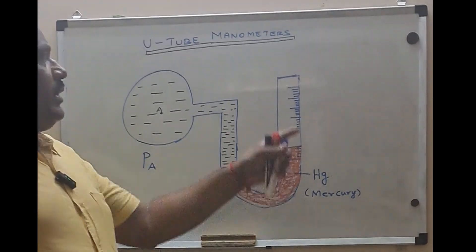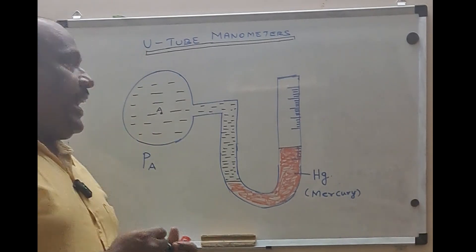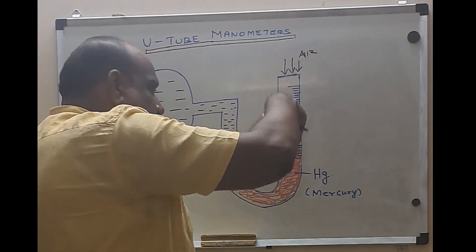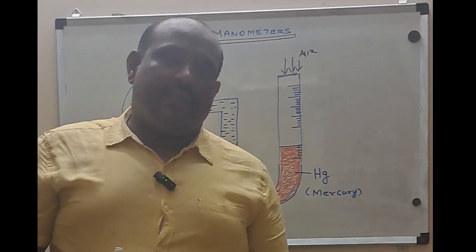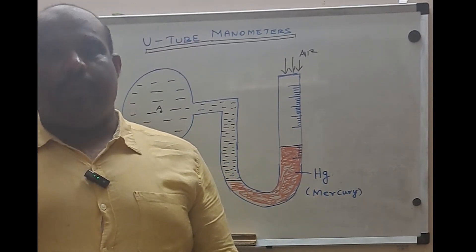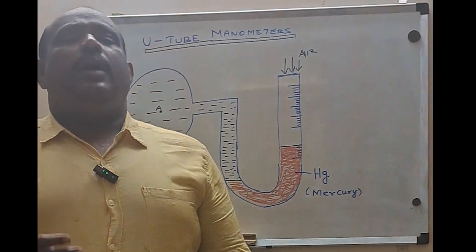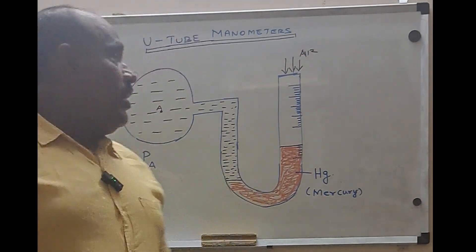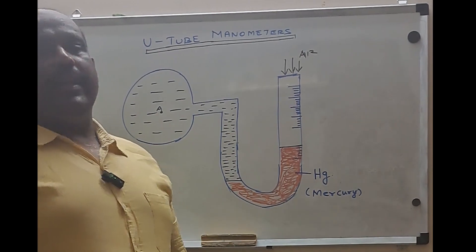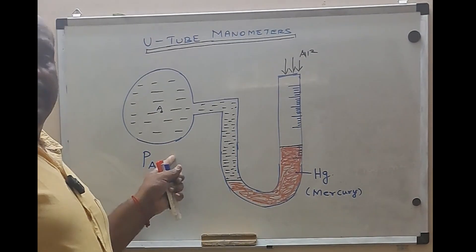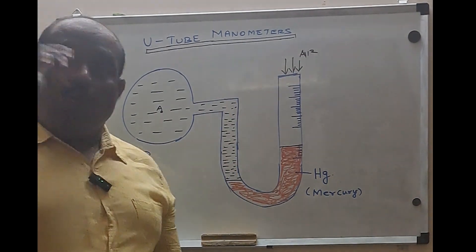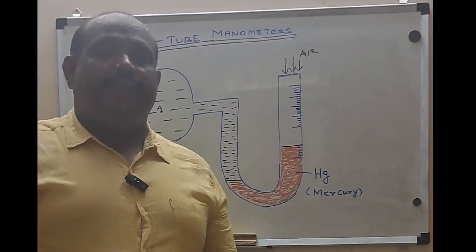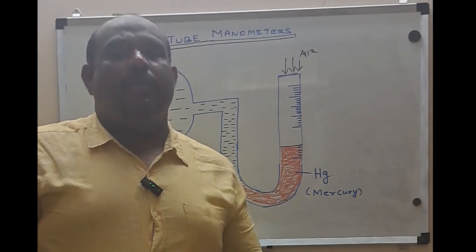On the other side there is no liquid except air. The air will also try to push this mercury, but the density of air is approximately 1 kg per meter cube — more specifically 1.18 to 1.22 — whereas the density of water is 1000 kg per meter cube. So the density of air is 1000 times lesser than water, and air cannot push the mercury to a much higher level compared to the liquid.